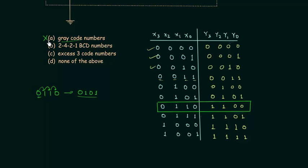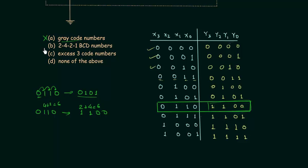Option A is not correct because it gives 1100 as the output. Now we find the 2421 BCD code for 0110. The 2421 BCD code for 6 is 1100, since 2+4=6 and 4+2=6. So this is 2421 code and option B is the correct option. We can also check XS3 code: 6+3=9, but here we get 12, which is not the XS3 code of 6. So option C is incorrect, and option B is the correct answer for the first problem.